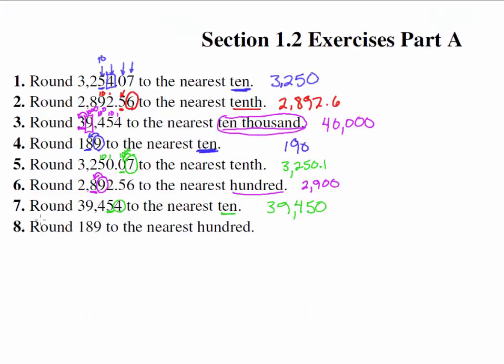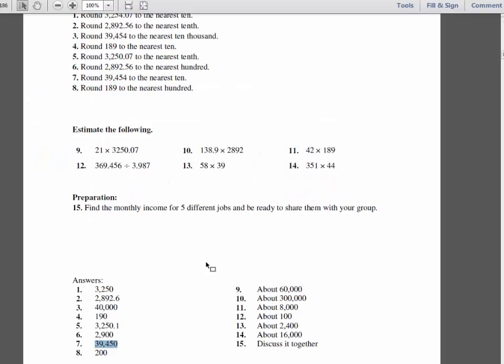And number eight, round 189 to the nearest hundred. Well, there's the ones column, the tens column. There's the hundreds column right there. So we're trying to round that guy. The eight is larger than five, so it'll cause that guy to go up to a two. And yeah, it's more than halfway between 100 and 200. So the nearest hundred is 200. So let's double check our answer, and we have it.